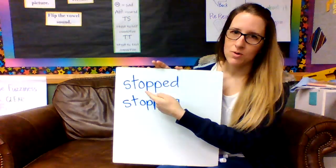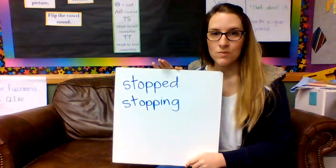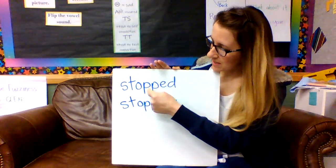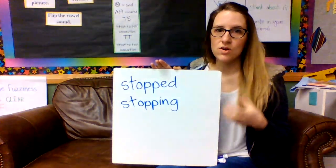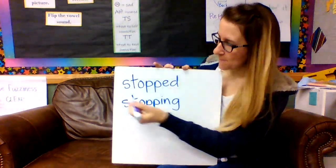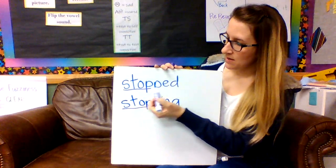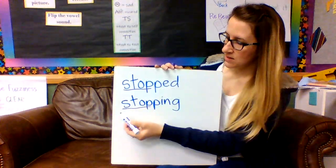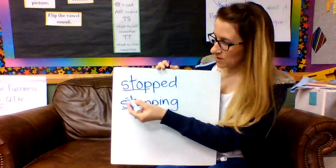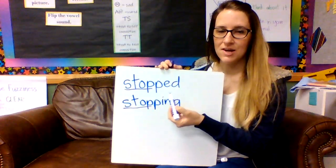So these two words that I have on the board right here: stopped and stopping. Let's see if we can figure out what the base word is. What word do you see at the beginning of stopped and stopping that is a word all by itself? If you said the word stop as the base word, you are correct. And we know that the ending -ed can say 'ed,' 'd,' or 't.' In this word it says 't' — stopped. We don't say 'stop-ed,' we say stopped.